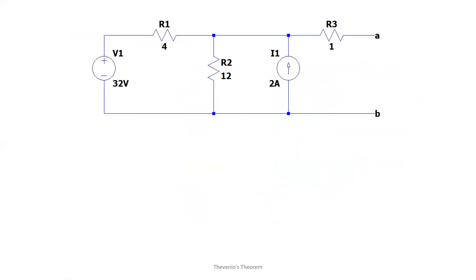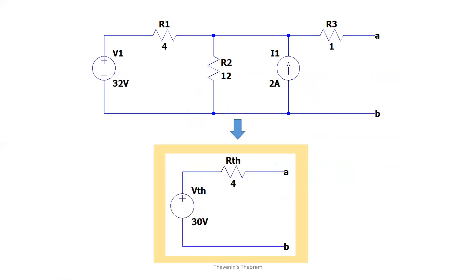So now this circuit, which looks a bit complex, can be expressed as a single voltage source in series with a single equivalent resistance. The equivalent resistance of this circuit at the left side of points A and B is just equal to 4 ohms, and the equivalent voltage source is just equal to 30 volts.